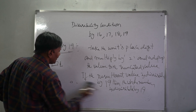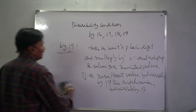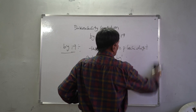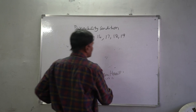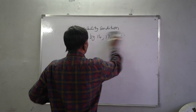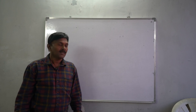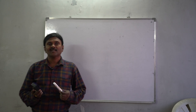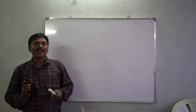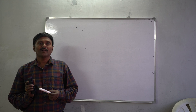That is about the divisibility condition of 19. If you follow this procedure, you can check whether the given number is divisible by 19, 17, or 18. If you know these conditions perfectly, you can check whether the given number is divisible by the given divisor. I hope you understood well. If you like this video, share it and subscribe, and watch our channel for more videos at www.alearningroom.com. Thank you very much.